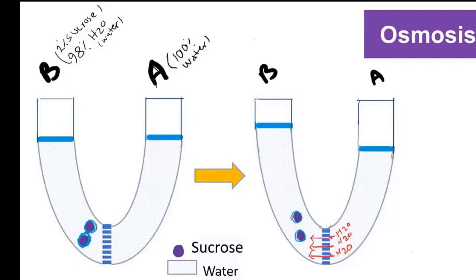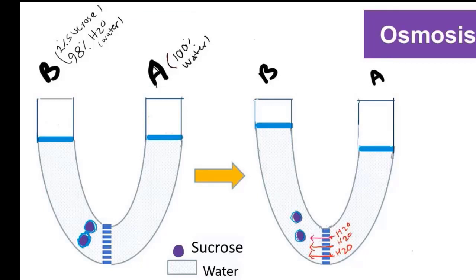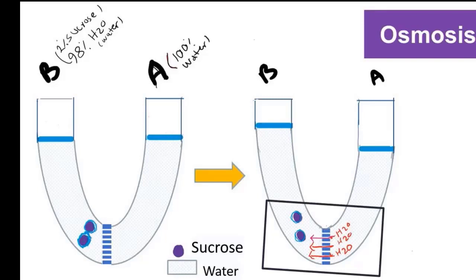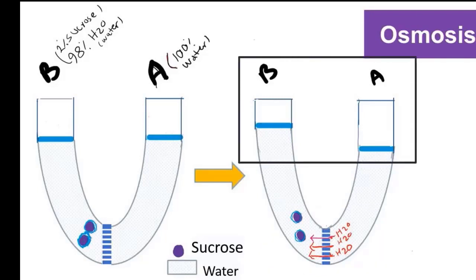On side A we have 100% water because it has pure water. On side B, we have 2% sucrose, which means we have 98% water. From part 1, we know molecules move from high concentration to a region of lower concentration. Water molecules are polar, and sucrose is also polar, so some water molecules gather around these polar solutes. As a result, side B has fewer free water molecules, so water moves more to the B side, and the level of the solution increases on the B side due to osmosis.